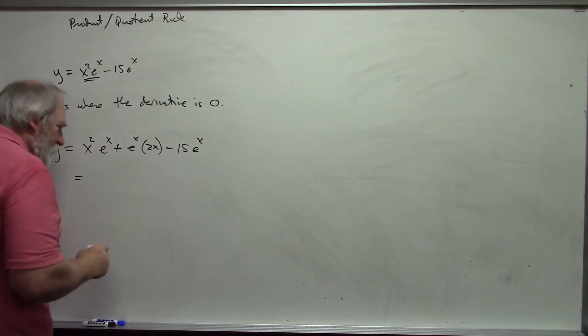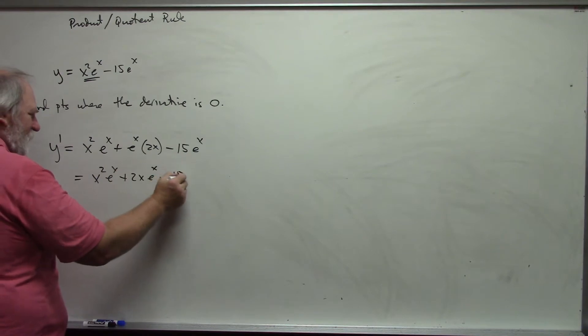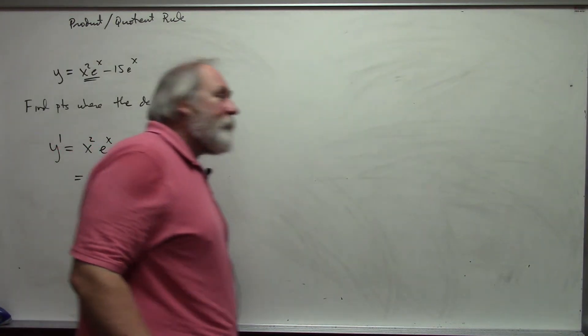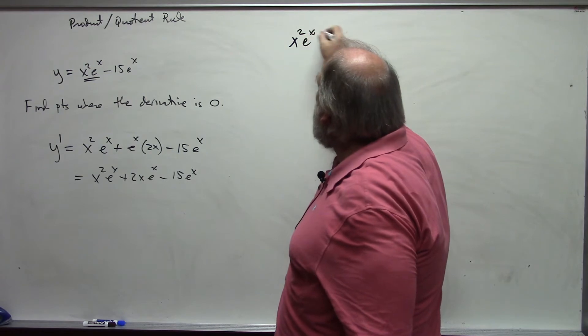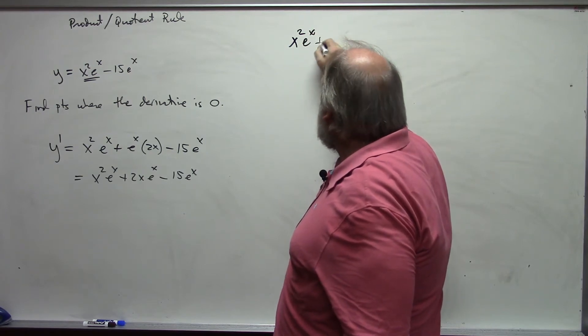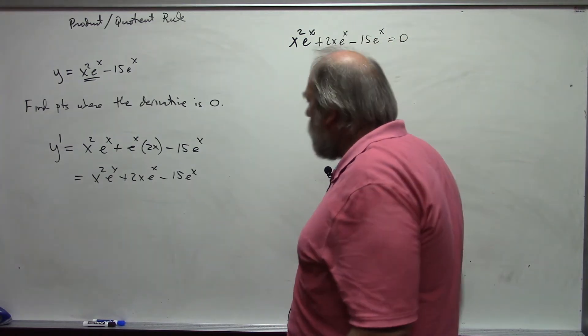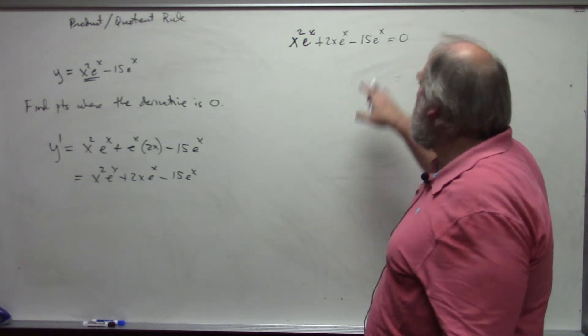And so we end up with x squared e to the x plus 2x e to the x minus 15 e to the x. And now I want to know where this derivative is 0. We want my derivative, x squared e to the x plus 2x e to the x minus 15 e to the x is equal to 0. This is a function, this is an equation. I want to find the values that make this particular equation true.